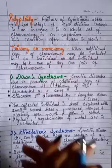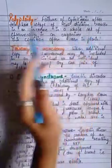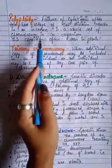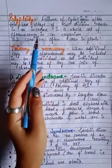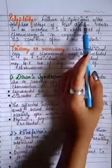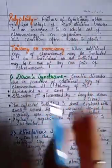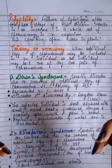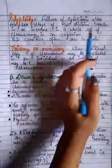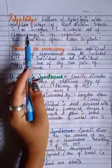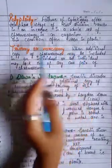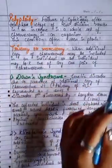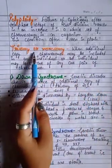Polyploidy is the failure of cytokinesis after the telophase stage of cell division, resulting in an increase in a whole set of chromosomes in an organism. Cytokinesis is the division of the cytoplasm of the parental cell into daughter cells. This condition is often seen in plants.